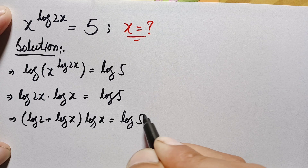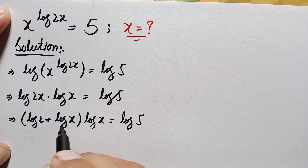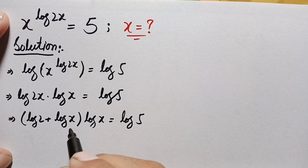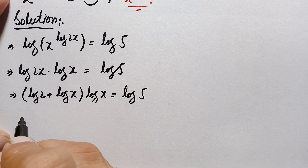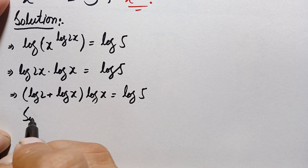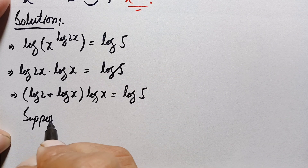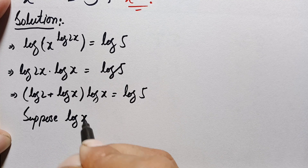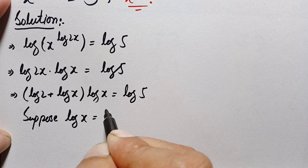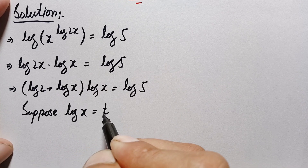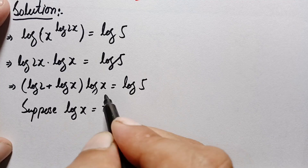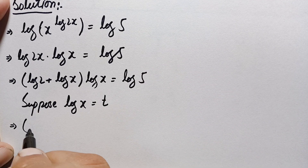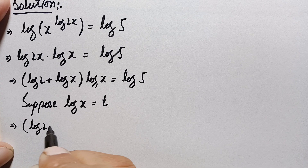There is log x appearing in both places. So let us suppose log x is equal to another variable t. The left hand side will become (log 2 + t) times t.